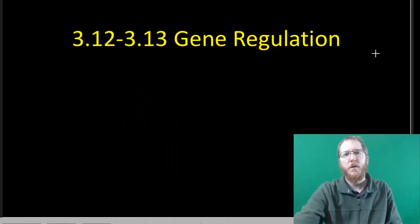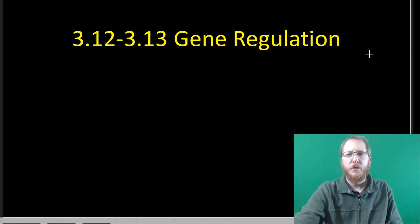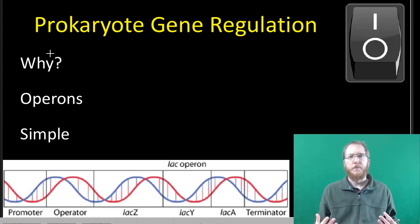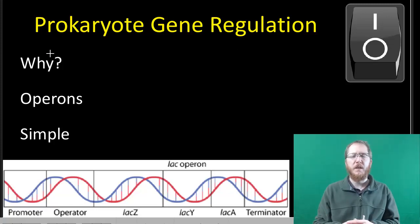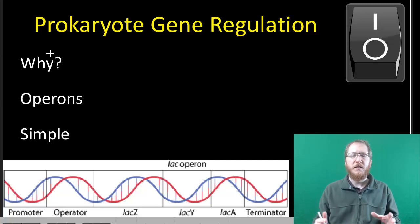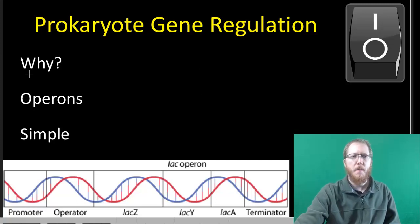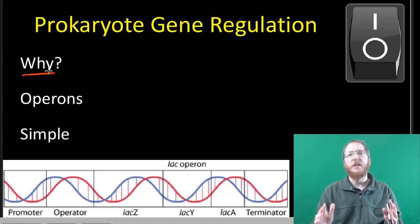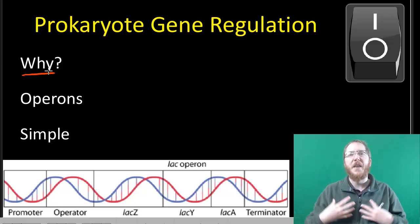Welcome to the 3.12 and 3.13 sections covering gene regulation. In these two sections, we're going to focus first on prokaryotic gene control. Prokaryotes are smaller, simpler cells, so they have simpler gene regulation mechanisms. The reason they still want to only express the genes they need is because this conserves energy.